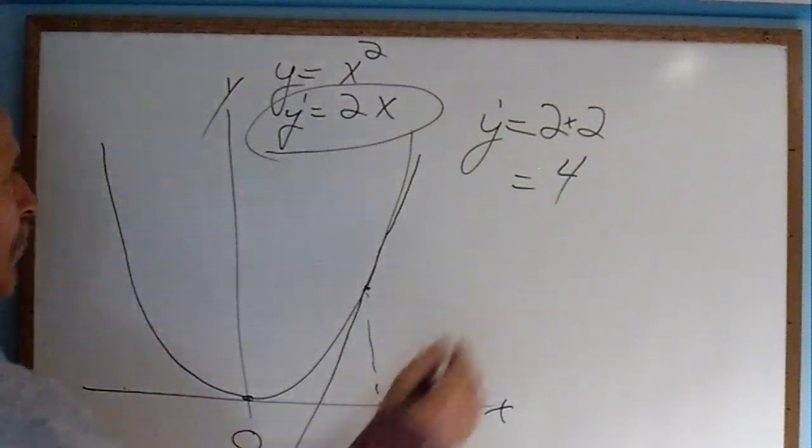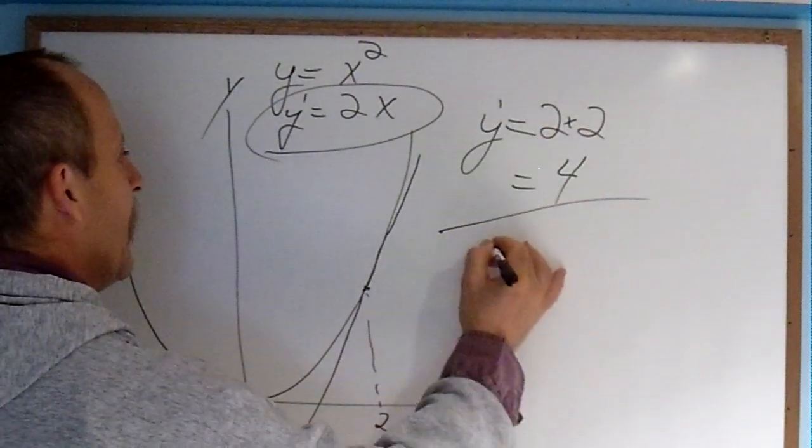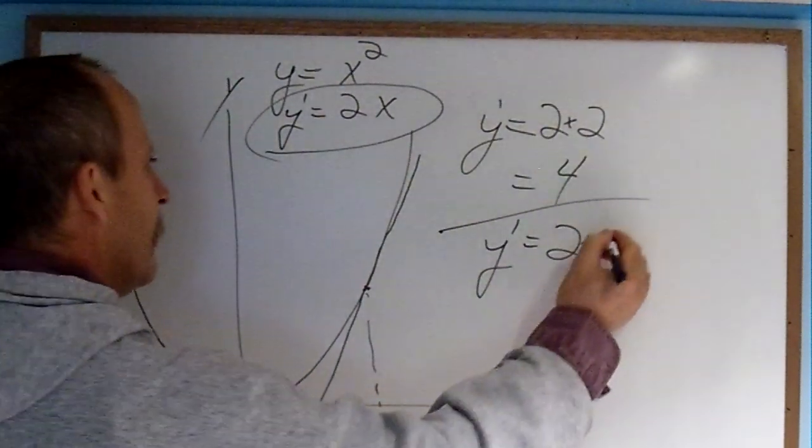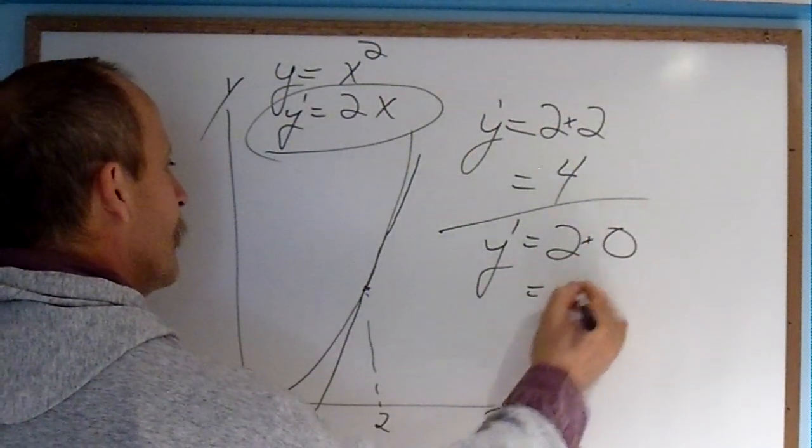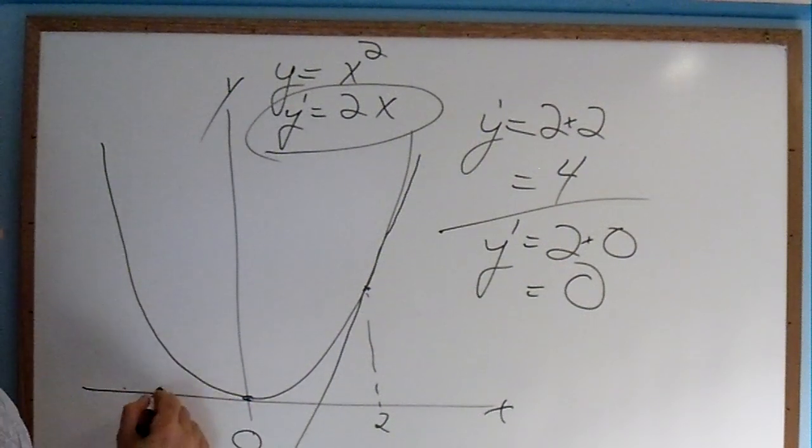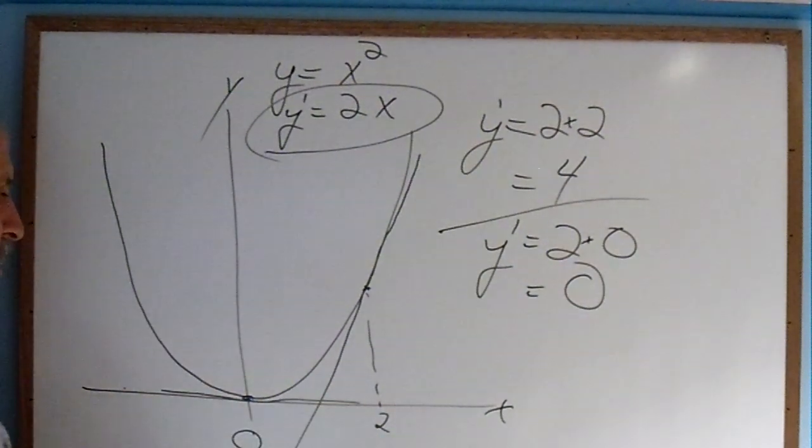x equals 0, what would that be? It would be y prime equals 2 times 0. And the slope would be 2 times 0 is 0. The slope at this point is 0. The slope of a horizontal line is 0.